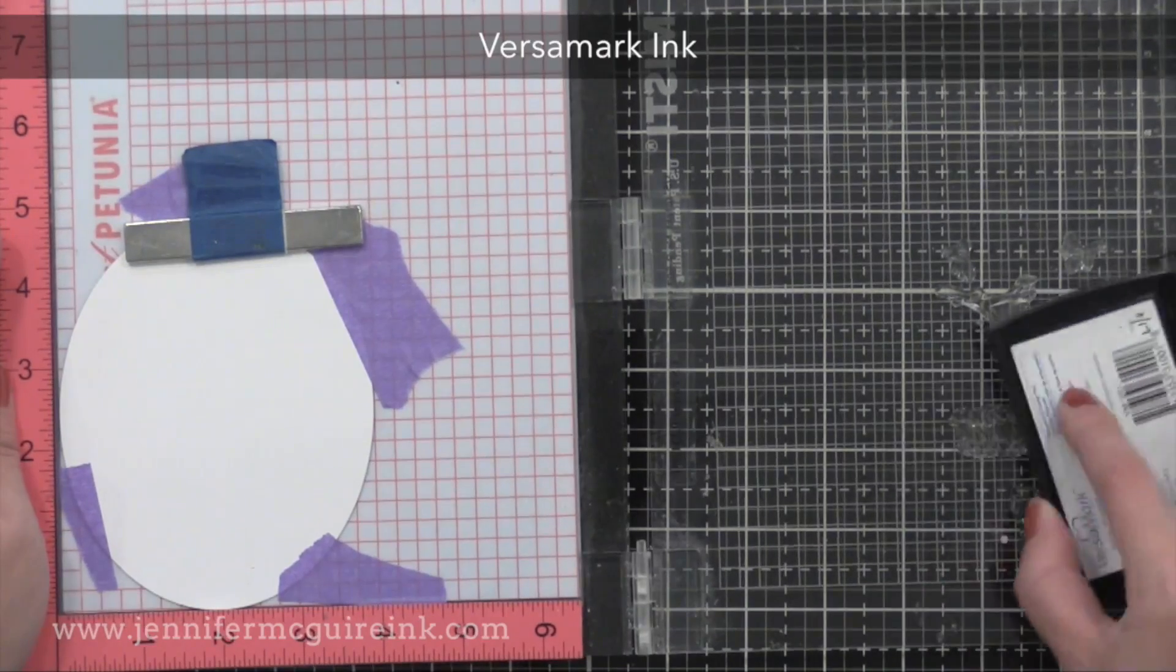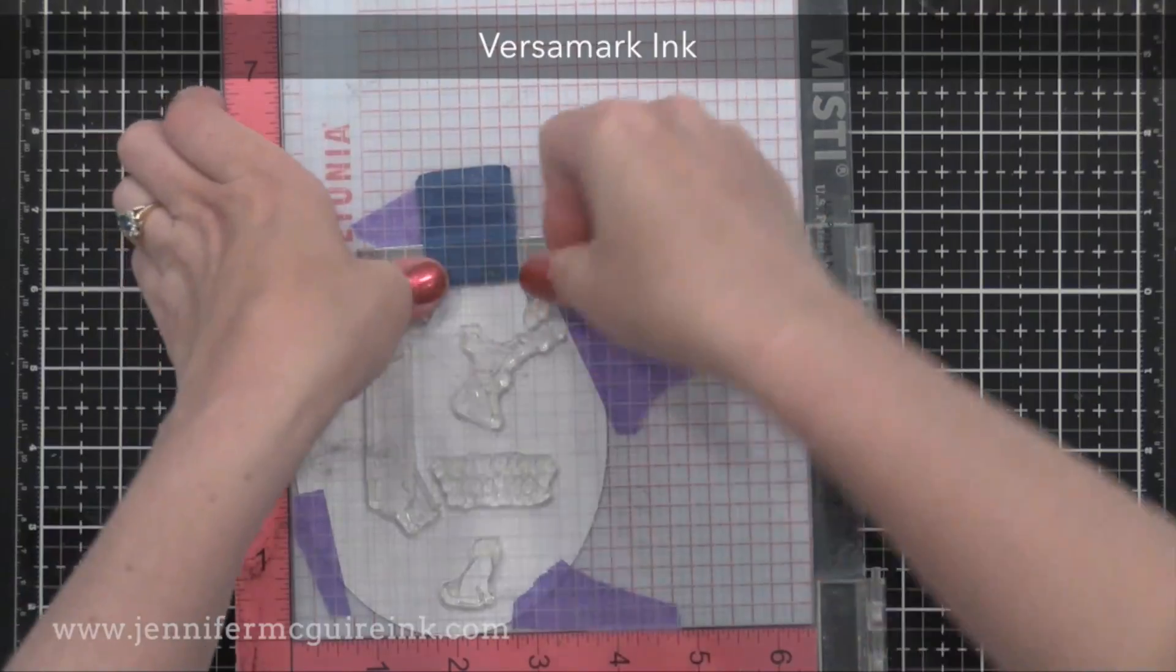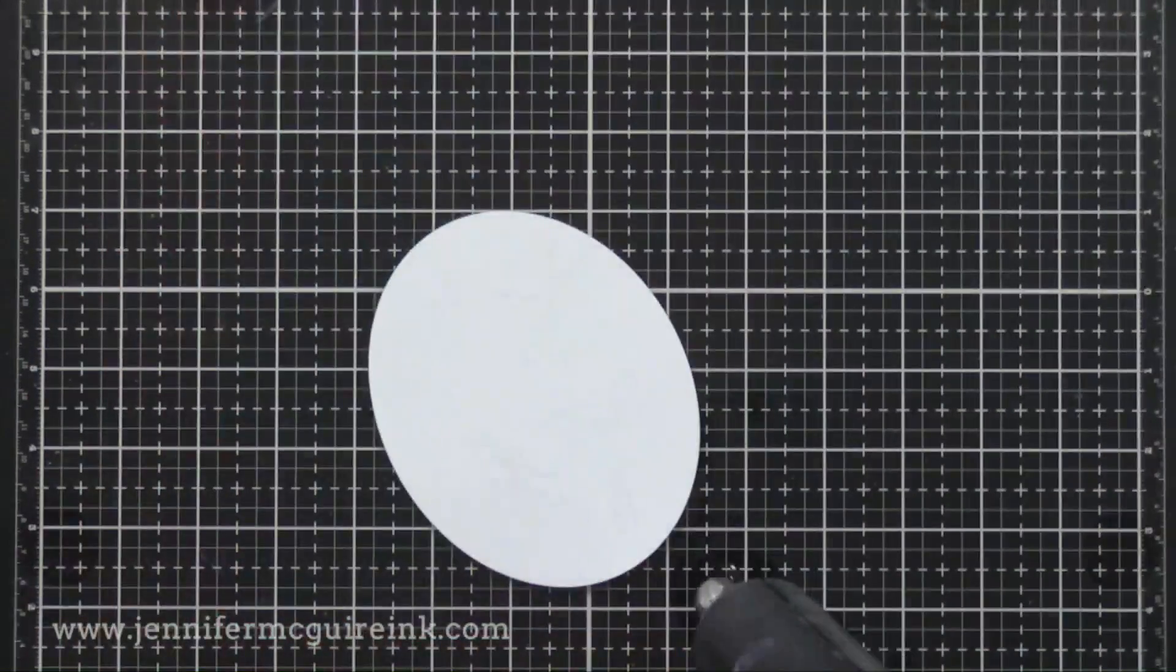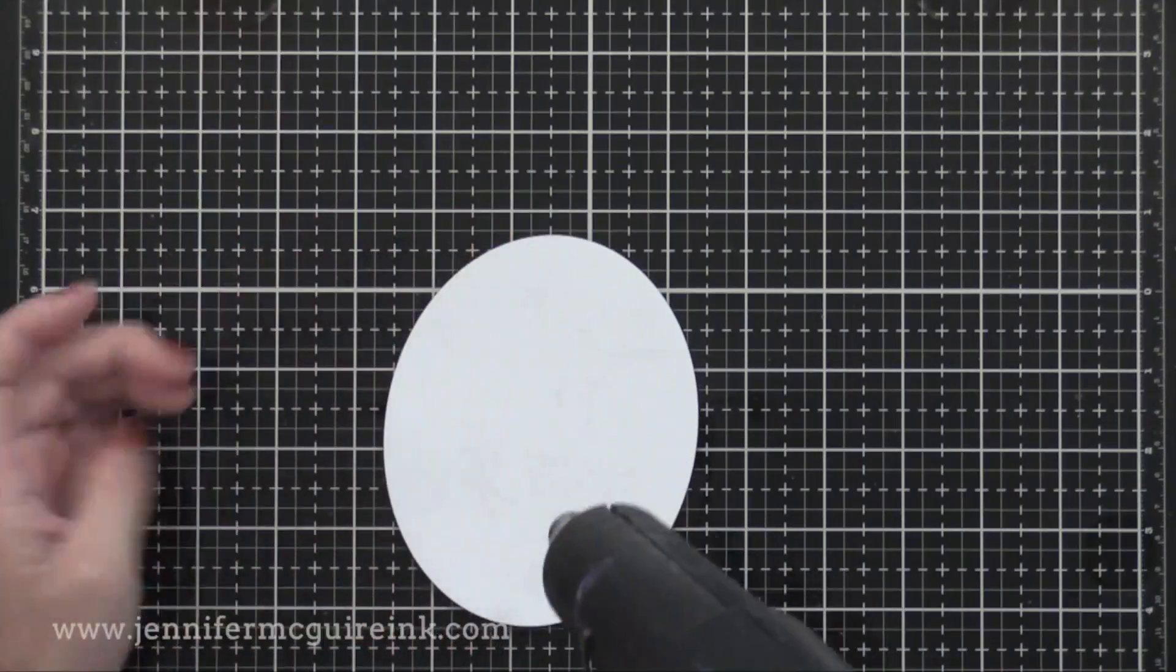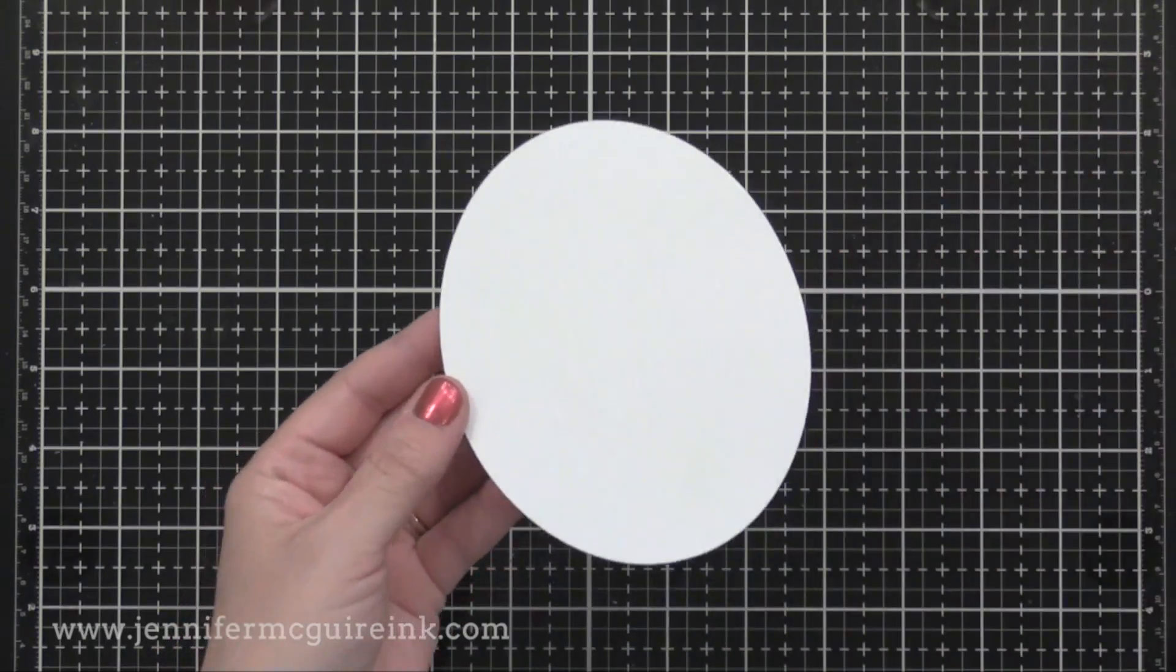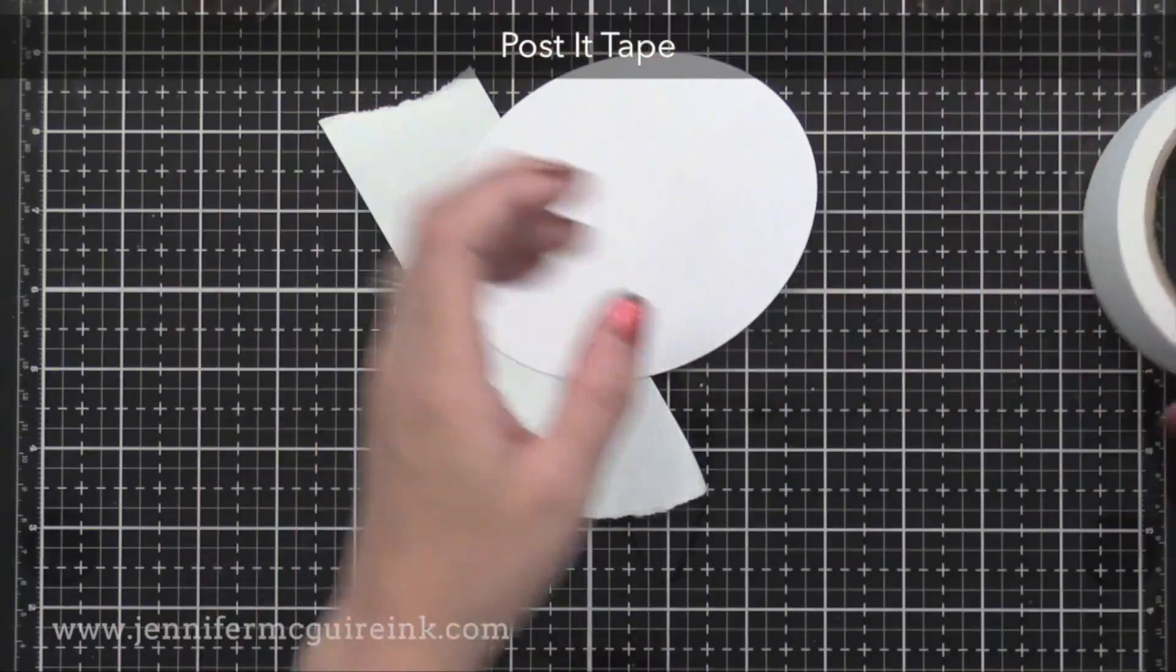I'm stamping with VersaMark ink which is a clear ink and it works great for this resist technique. I'm stamping that onto that coated specialty paper. Again, you could use glossy card stock instead. Then you want to heat set it till it's completely dry and the images disappear. You can barely see them at all.